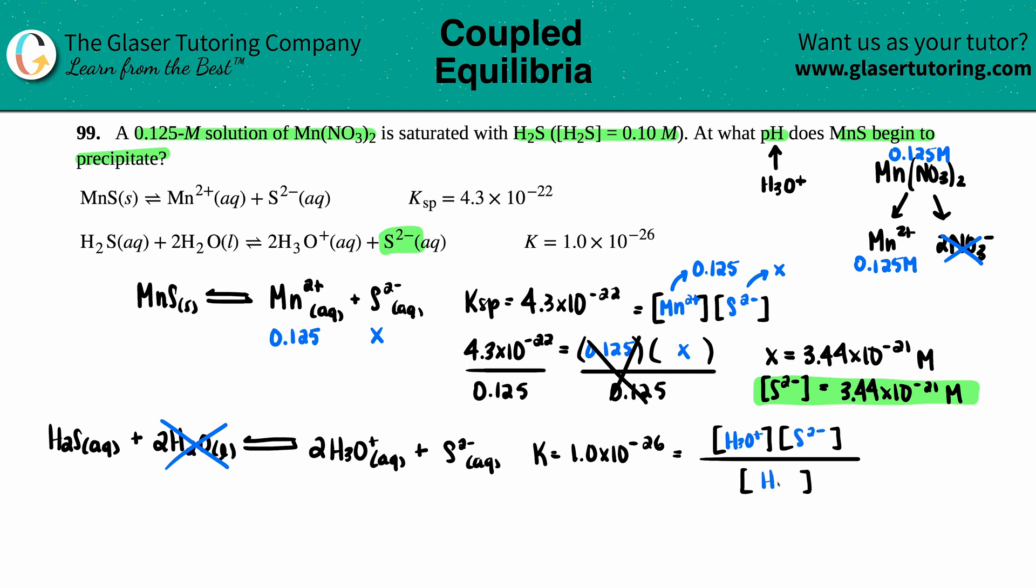So this would be H₃O⁺ times S²⁻, all divided by H₂S. And going back, there was a 2 in front of the H₃O⁺. So I just have to take that concentration and square it.